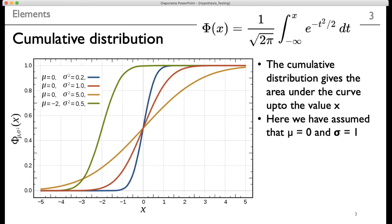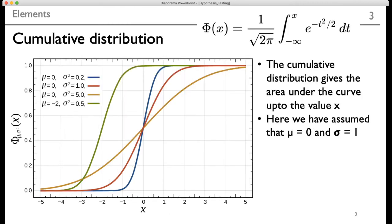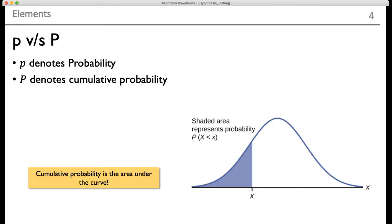Now we look at the cumulative distribution. The cumulative distribution is nothing but the integration of this function f(x) up to the value of a particular variable. So basically, if I have capital Phi of x, we are going to integrate this function up to the value x. This is called the cumulative distribution function.